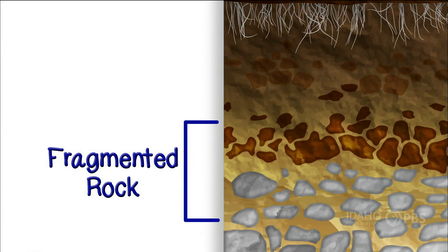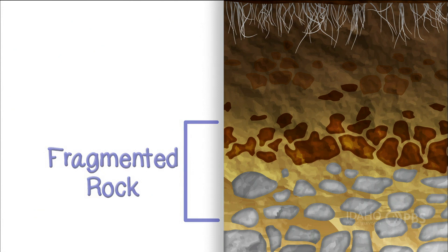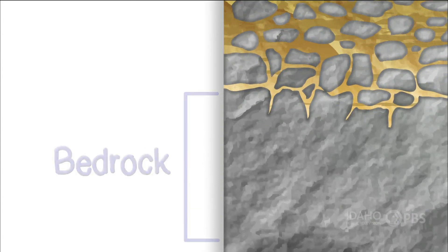Next is the fragmented rock layer, or parent material. Nothing grows at this layer. It's made of rock particles, sand, clay, salts, and minerals. At the deepest level is solid bedrock.